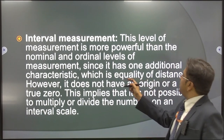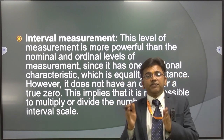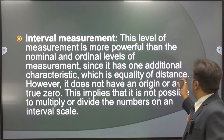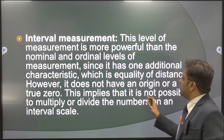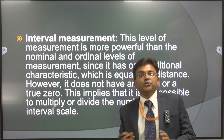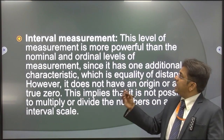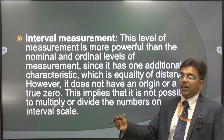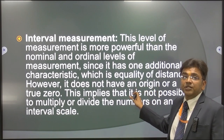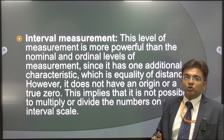The third is interval measurement, which is more powerful than the nominal and ordinal levels because data is classified into interval forms. It has the additional characteristic of equality of distance. However, it does not have a true zero or origin, which means it is not possible to multiply or divide numbers on an interval scale. The interval tells us the gap — say 5 to 10 — but we cannot determine the origin or true zero, which is this scale's drawback.